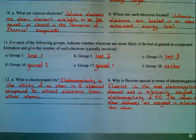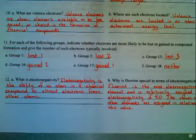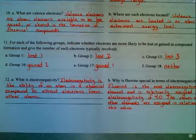And then Part E, Group 17. We're very close to satisfying our octet. We only need to gain one. We're going to gain one.